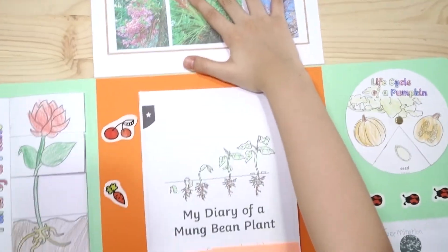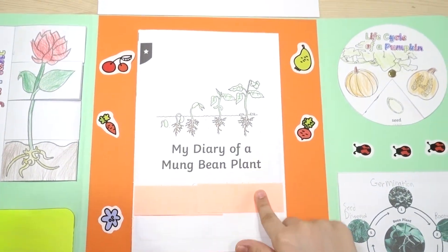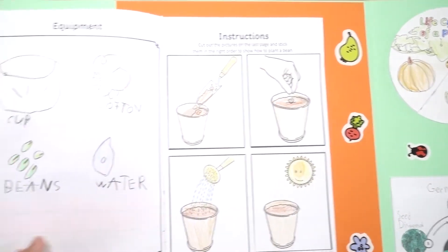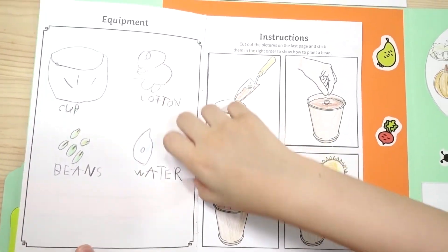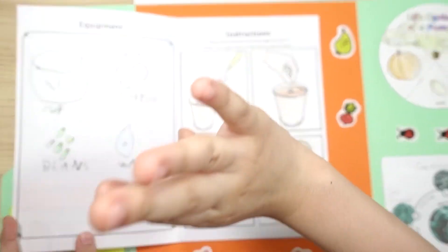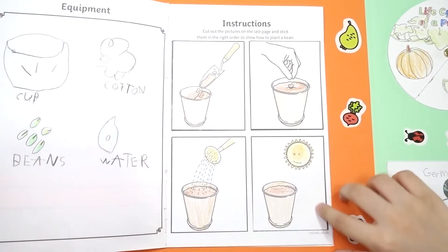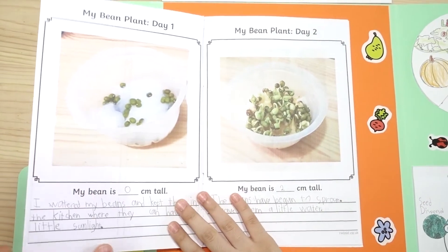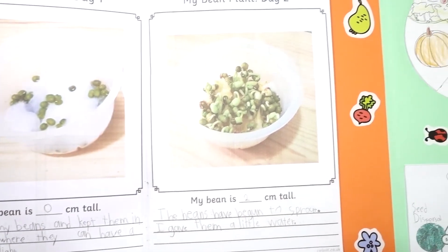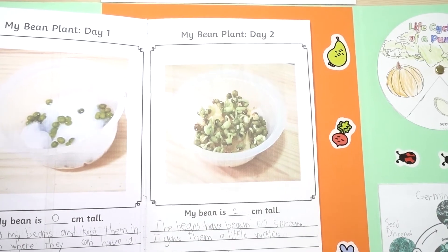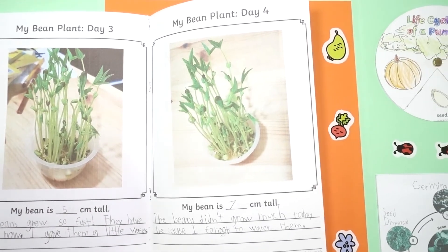My diary of a mung bean plant. Equipment — I use these things to make a plant grow: cup and beans, water. And this is the instruction. My bean plant day 1, my bean plant day 2, my bean plant day 3, and my bean plant day 4.